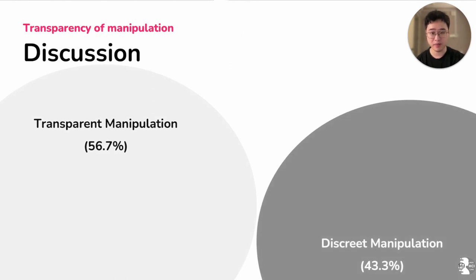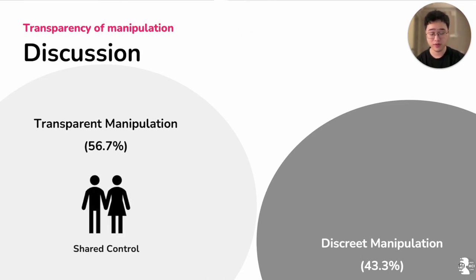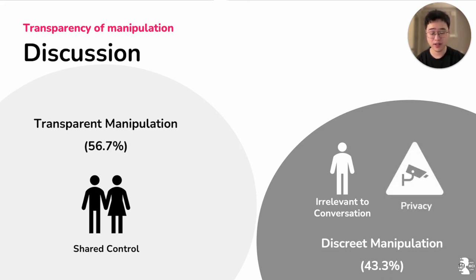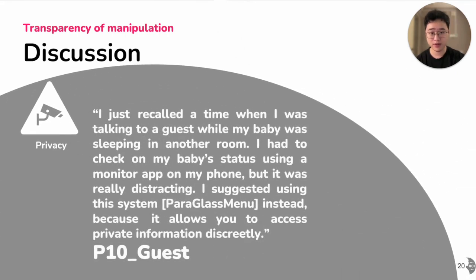The next insight is about transparency of manipulation. Even though Paragraphs Menu is designed for discrete manipulation in social settings, over half of the manipulations in our study were conducted transparently, because they involved shared control — for example, users collectively selecting a song. For discrete tasks, participants reported two reasons: if the manipulation is irrelevant to the conversation topic, such as turning on the kettle, they do it discreetly to avoid disruption. The second reason is privacy — one guest reported that the system reminded him of a scenario where he needed to check his baby's monitor while hosting a guest. In the past, using a phone app was distracting and could reveal private information; he suggested using Paragraphs Menu instead to access private information discreetly.